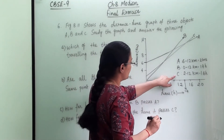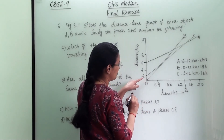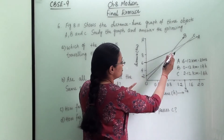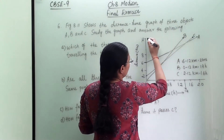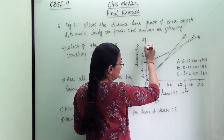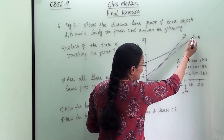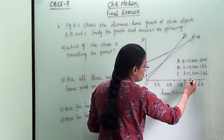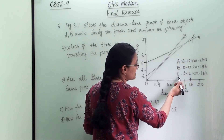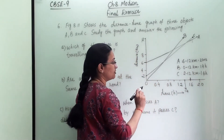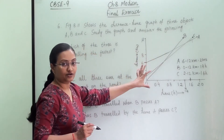For object C, the journey starts at 2 km — not from 0. Extending the line to the y-axis gives 12 km, and extending to the x-axis gives 1.6 hours. So object C travels from 2 km to 12 km in 1.6 hours. These are the timings and journeys for all three objects as read from the graph.